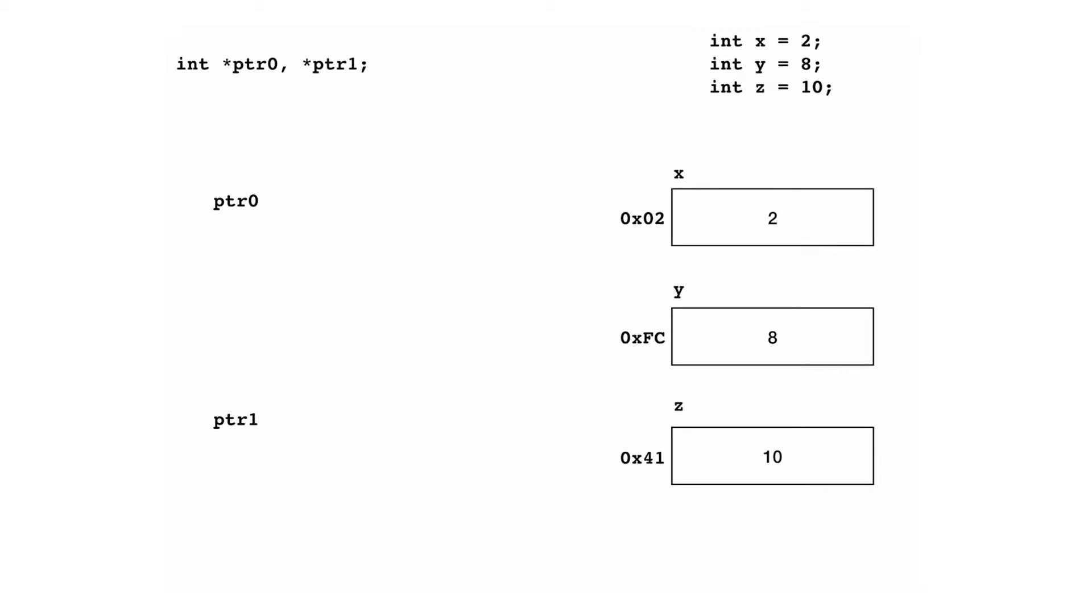In C, we usually declare variables and place certain values in them. What you see here is me declaring three different integer variables: x, y, and z, and I'm putting 2, 8, and 10. What I'm showing you here is a graphical representation of these declarations. Generally speaking, x, y, and z live somewhere in memory, and I'm assuming fictitious addresses here. So I placed x in location 0x02, y in location 0xFC, and z in location 0x41.